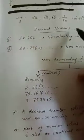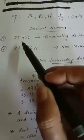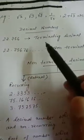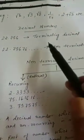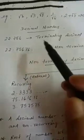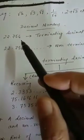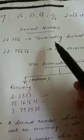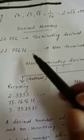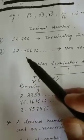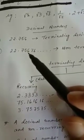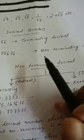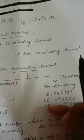If we take decimal numbers, 22.756 is a terminating decimal — it ends after 756 with no further digits. But 22.25676... is continuing, so it is called a non-terminating decimal.